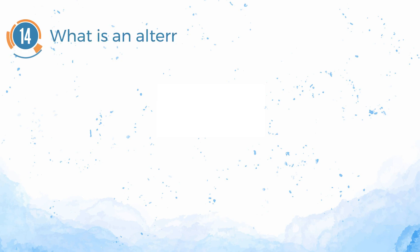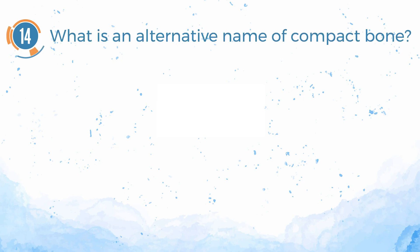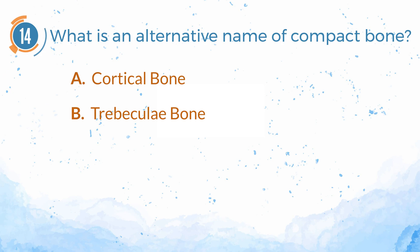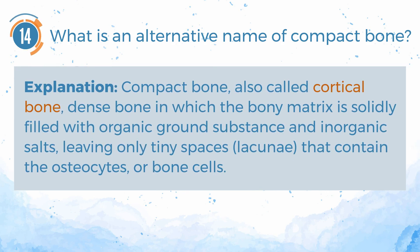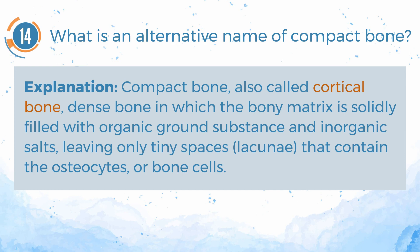Number 14. What is an alternative name of compact bone? A. Cortical bone. B. Trabecular bone. The answer is A — cortical bone. Compact bone, also called cortical bone, is dense bone in which the bony matrix is solidly filled with organic ground substance and inorganic salts, leaving only tiny spaces, lacunae, that contain the osteocytes, or bone cells.